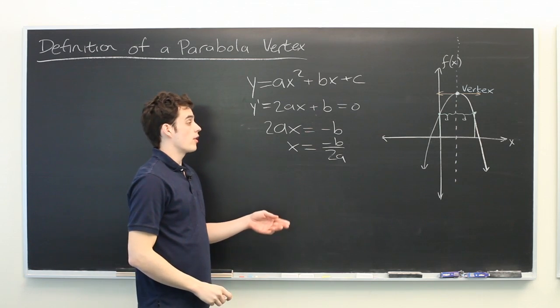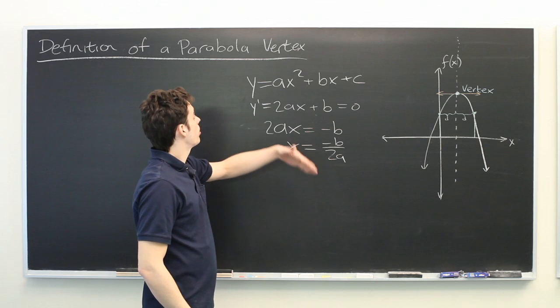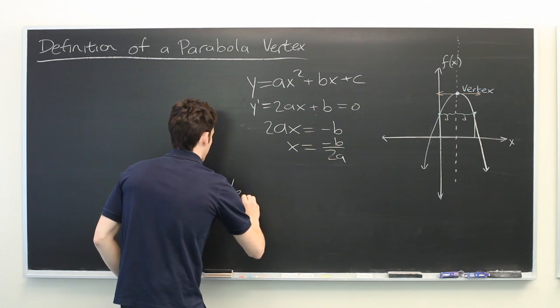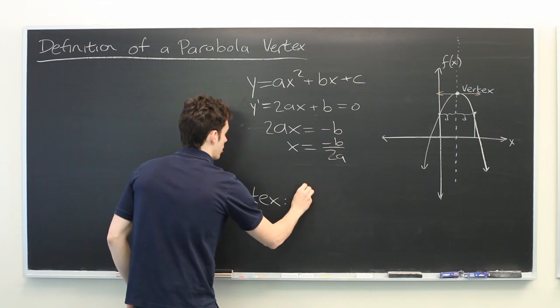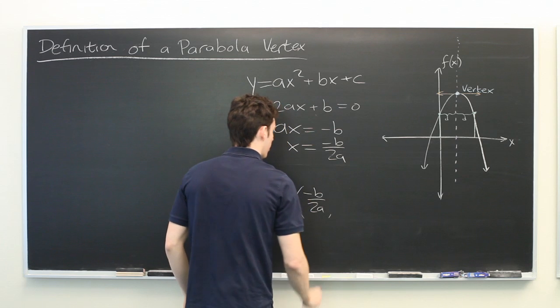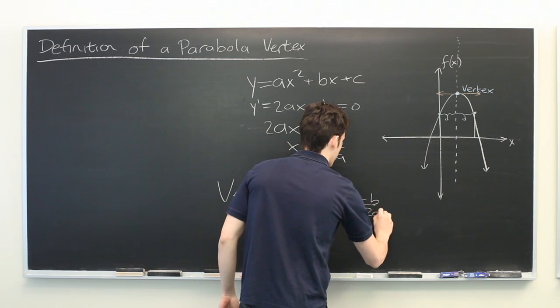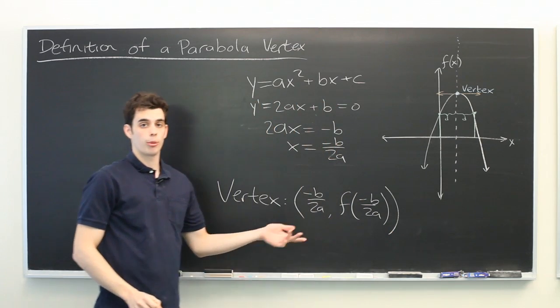Then, if you want to find the y coordinate of the vertex, you simply take whatever this number is and plug it into your original equation. So, more generally, the vertex can be found at the point negative b over 2a comma f of negative b over 2a, where f is the function that is defining your parabola.